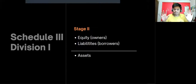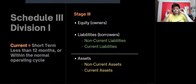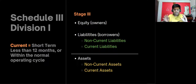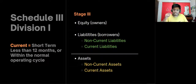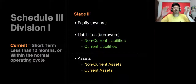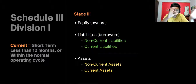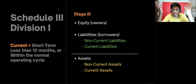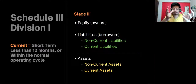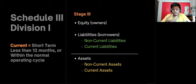Now let's move a little deeper into stage two. Forget about equity for a moment. Liabilities and assets can each be classified into two headings: non-current and current. Non-current liabilities and current liabilities; non-current assets and current assets. Earlier these used to be called long-term and short-term liabilities, but now the terminology has changed to current and non-current.